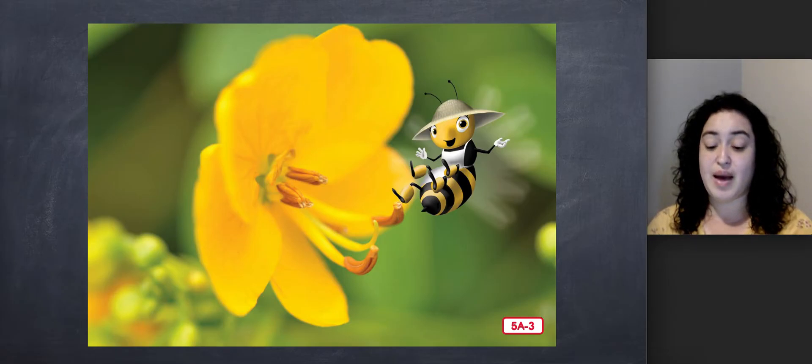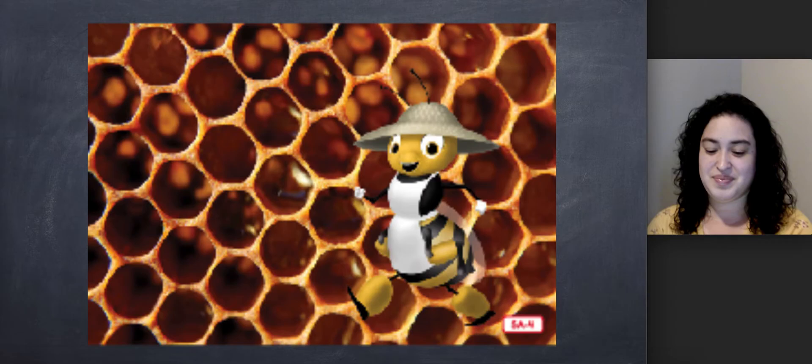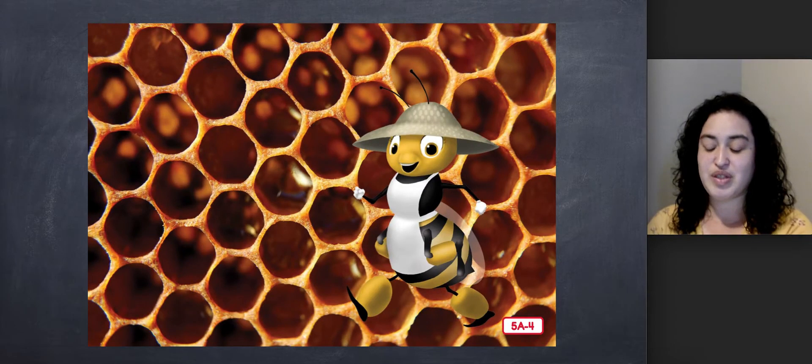Nectar, with most of the water gone, turns into something that both bees and people love. What do you think happens when they fan the water out of the nectar? What does that turn into that people love? Let's see if you're right. Nectar, with most of the water removed, is called honey.